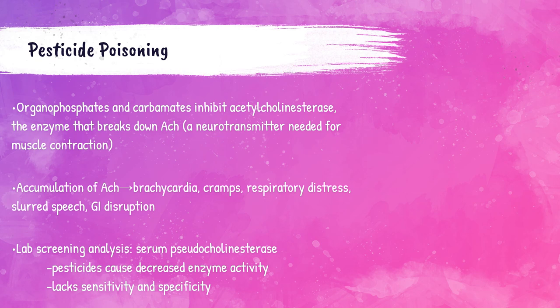Organophosphates and carbamates — common pesticides — inhibit an enzyme called acetylcholinesterase, which is responsible for breaking down the neurotransmitter ACh. ACh is needed for the contraction of muscles. When ingested, these pesticides lead to an accumulation of ACh, causing respiratory distress, bradycardia, and disruption of the gastrointestinal system. Laboratories can test for pesticide poisoning by running a serum pseudocholinesterase test — pesticides cause a decrease in the activity of this enzyme, though the assay does lack sensitivity and specificity.